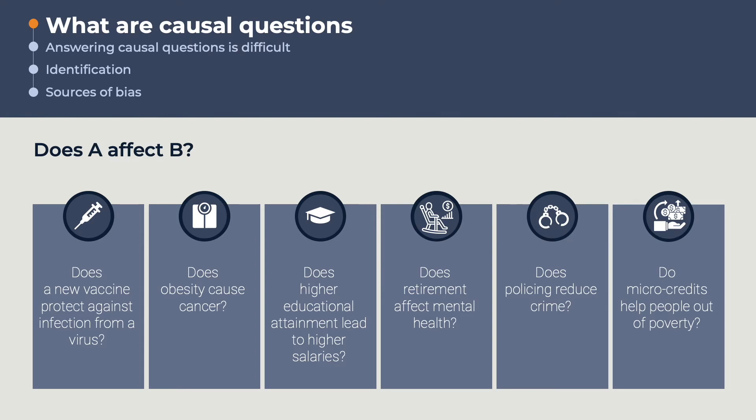Examples from these fields include whether educational attainment leads to higher salaries, whether retirement affects mental health, the effect of policing on crime, and whether microcredits help people out of poverty.